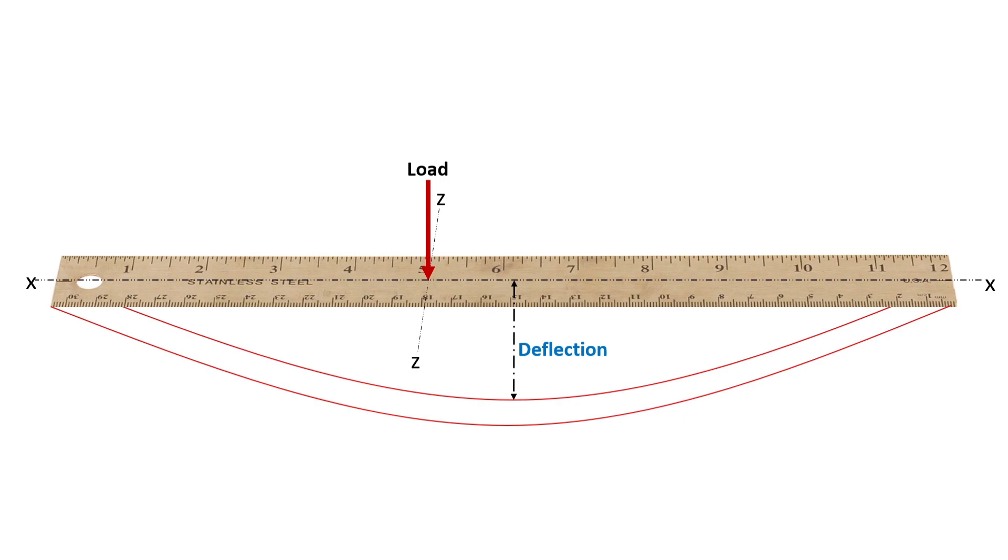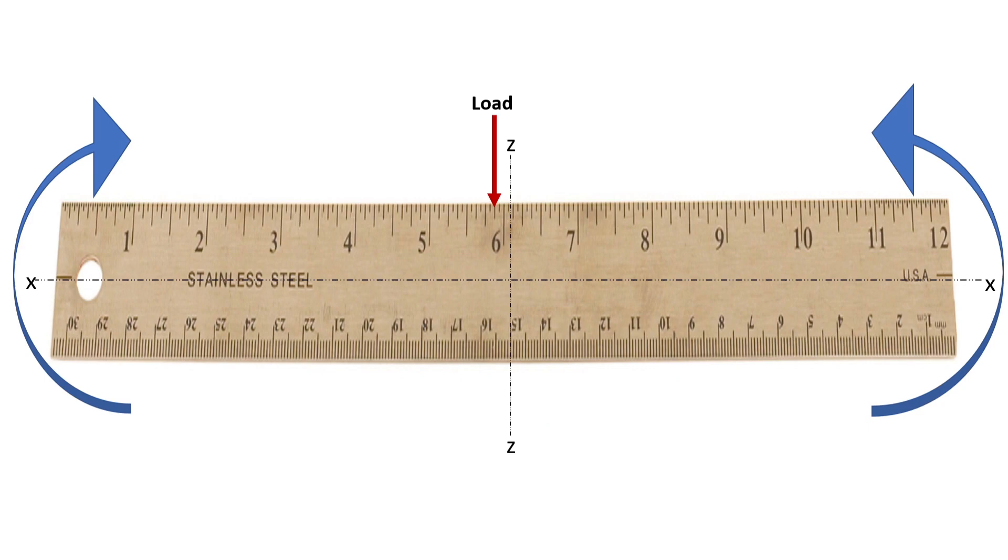In both the cases, the scale has the same cross sectional area. However, by changing the orientation of the scale, flexural rigidity is created. This means that the scale resists greater moments when the measurement along the vertical axis is greater than the horizontal axis.